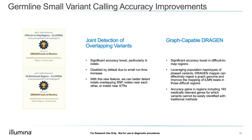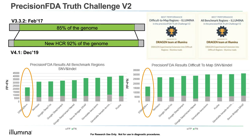The original Genome in a Bottle truth set version 3.3.2 covered about 85% of the genome; the new truth set increased that to about 92% — a 7% increase covering those difficult-to-map regions. With the improvements we made in the challenge, Dragon was about 20 to 30% better not only in the difficult-to-map regions but also in overall benchmarking, compared to the other 20 to 25 groups that submitted. We worked to integrate this into Dragon 3.7, so this capability is now available to all users.